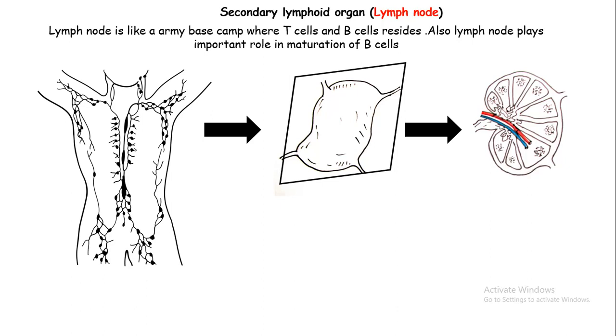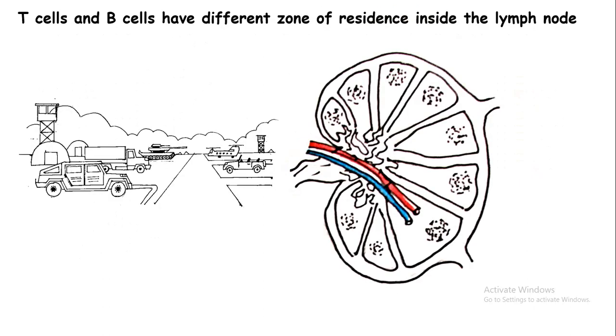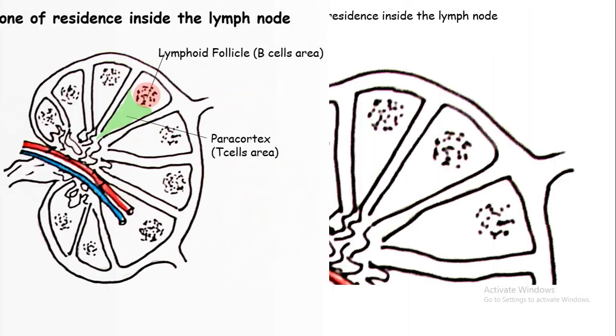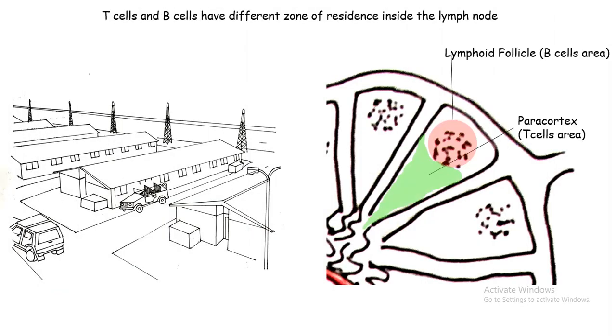After their fate is determined, they migrate into a secondary lymphoid organ which is the lymph node. Lymph node is just like an army camp. In an army camp, armies stay there for a particular period and wait there till any kind of massacre happens. There are distinct regions inside the lymph node where B-cells and T-cells reside.